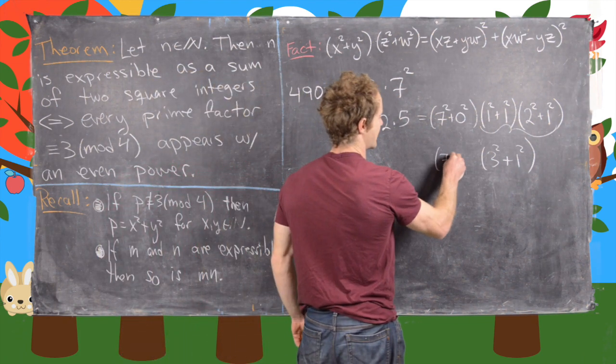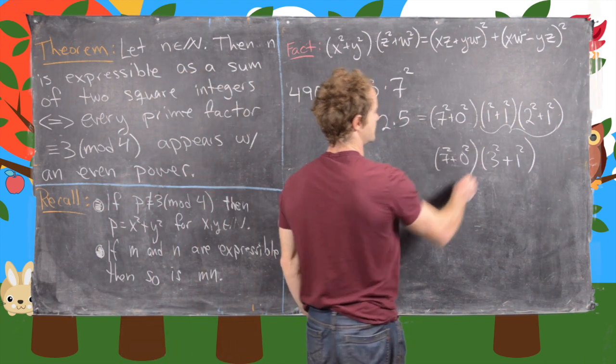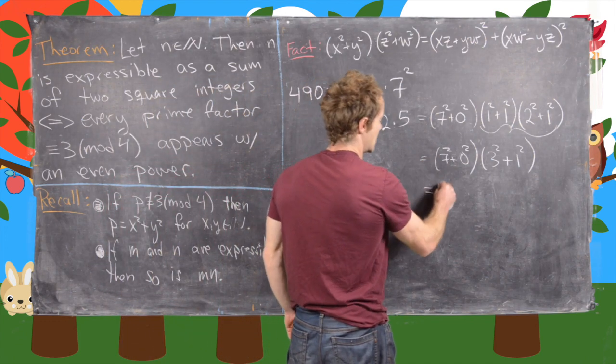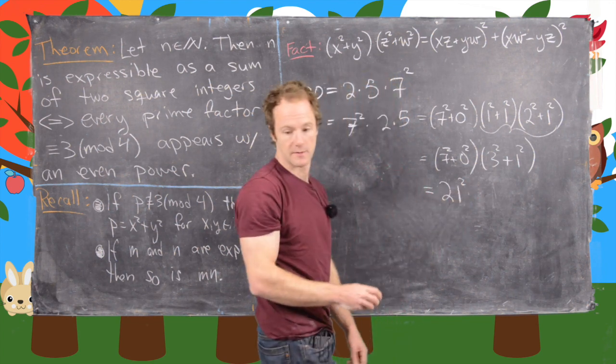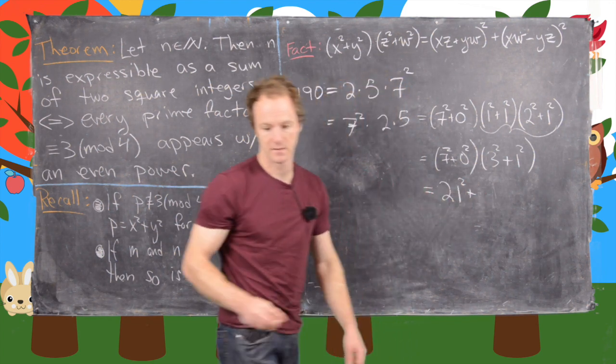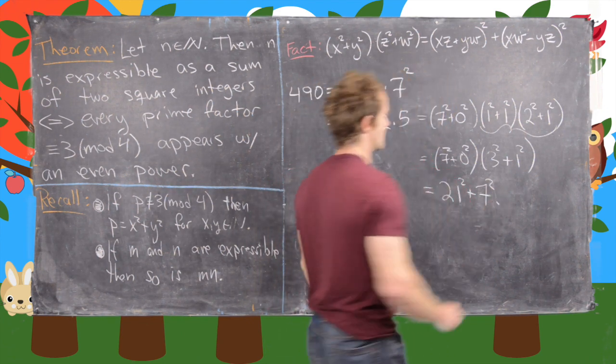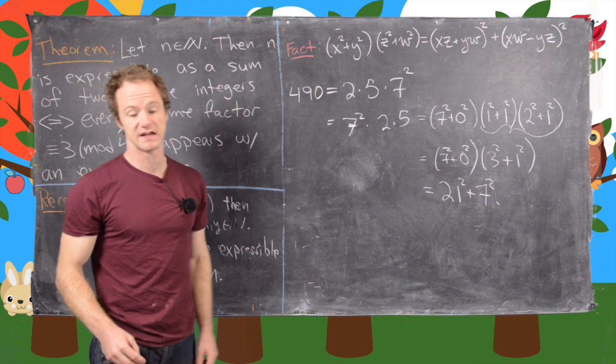Now let's bring this 7 plus 0 squared down. And then we can just do that same thing again. And we'll notice that we get 21 squared plus 7 squared. And then you can easily check that this is equal to 490.